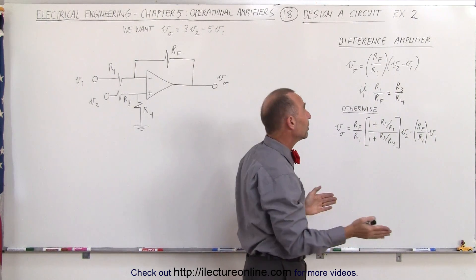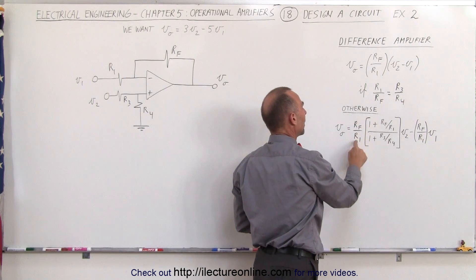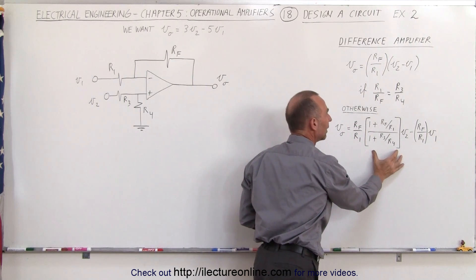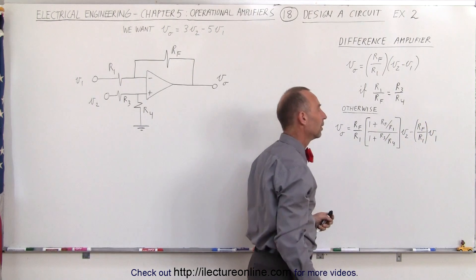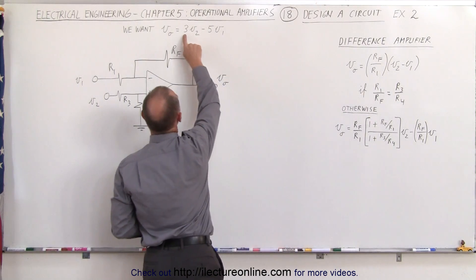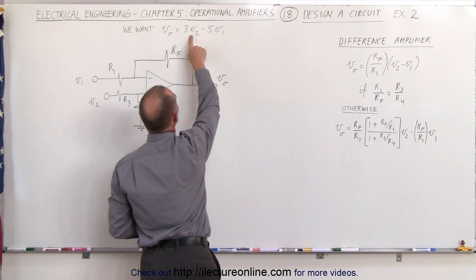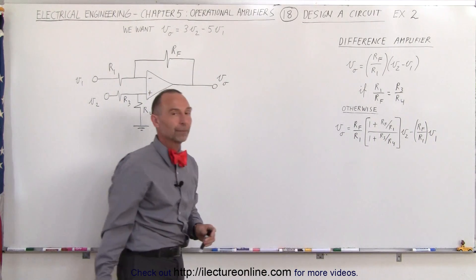If that's not the case we need to go to a different equation where the output voltage is equal to RF divided by R1 times this quantity times V2 minus RF divided by R1 times V1. We're going to need to use this equation because the coefficient in front of V2 is not the same as the coefficient in front of V1.